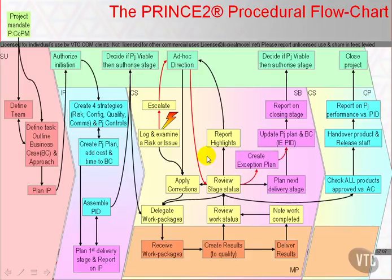Taking each in turn: when an exception report shows that the current stage will not complete to its current stage plan, plus or minus agreed tolerances, then the activities of managing a stage boundary may be used to bring a premature close to the current stage and create a new stage plan — also, probably a revised project plan, revised business case, revised risk profiles, and perhaps revised role assignments and responsibilities.